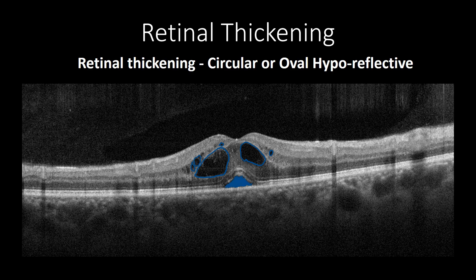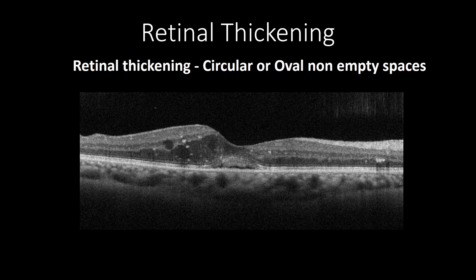Increased retinal thickening with hyperreflective oval or saccular cystic spaces can be found in cystoid macular edema related to diabetic macular edema, secondary to retinal vein occlusion, inflammatory processes, and other pathologies. Increased retinal thickness with non-empty cystic changes is commonly seen in diabetic macular edema and macular telangiectasia type 1, and this can help distinguish diabetic macular edema from macular edema secondary to retinal vein occlusion or cystoid macular edema of inflammatory origin.